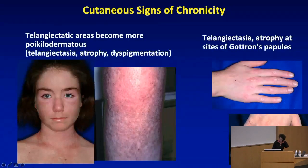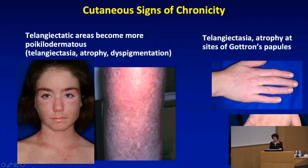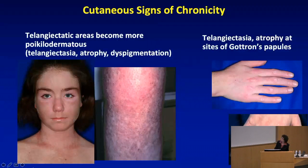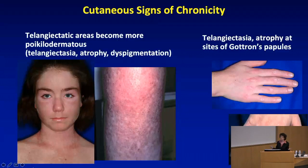I want to talk about cutaneous signs of chronicity because many children have persistent skin disease over time. We call this poikiloderma — the combination of telangiectasia with atrophy of the skin and dyspigmentation, which can be hypo- or hyperpigmented. You can see not only the telangiectasia but atrophic skin and hyperpigmented areas. Over time in the areas overlying the joints, there's atrophy, residual telangiectasia, and hypopigmentation — all signs of disease chronicity.